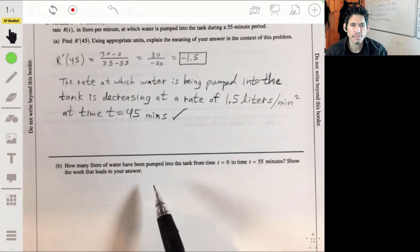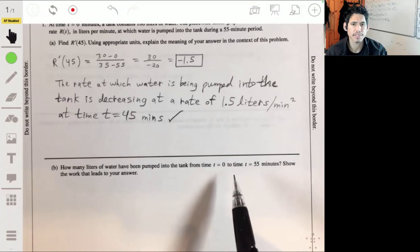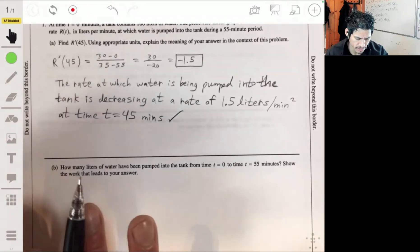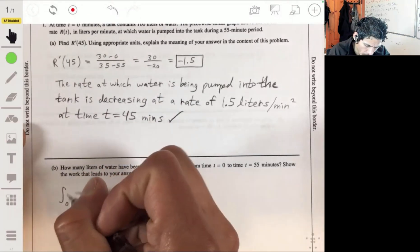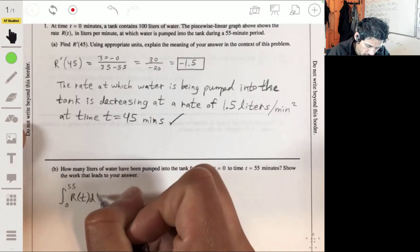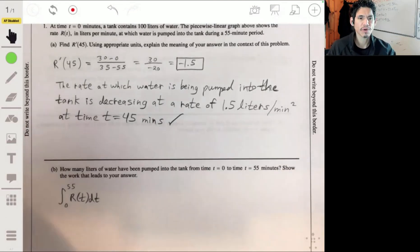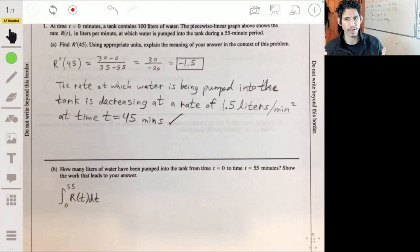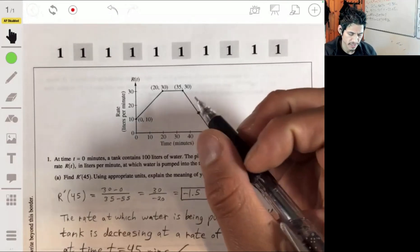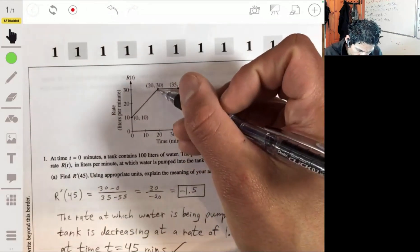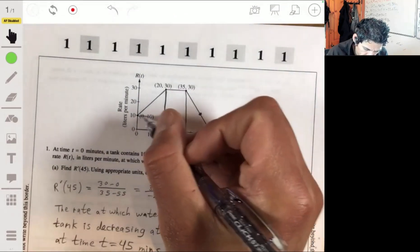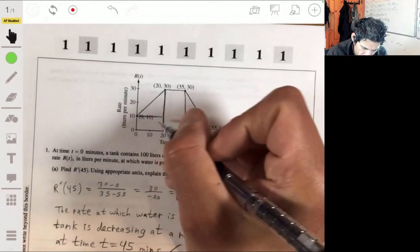Part B: How many liters of water have been pumped into the tank from time t=0 to time t=55 minutes? Show the work that leads to your answer. Okay, so this is just an integral from 0 to 55 of r(t), the rate at which water is being pumped in. When you integrate the rate at which water is being pumped in over some time period, you're going to get the total amount that's pumped in. And we have a pretty simple graph to integrate because this is just area made up of rectangles and triangles that we can find with simple multiplication. So we're going to find the areas and add them up.